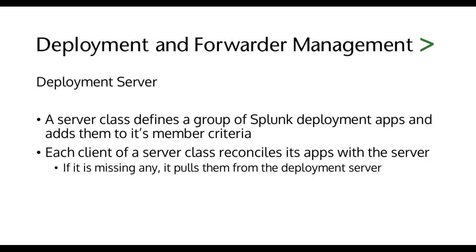For example, if you set up a server class that was Microsoft Windows Domain Controllers, and those domain controllers needed a Splunk heavy forwarder, then each domain controller that talked back to this Splunk deployment server would reconcile whether it has the appropriate app on it or not. And if it doesn't, the client would pull that app from the deployment server.